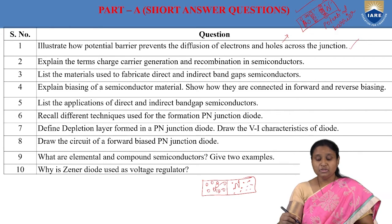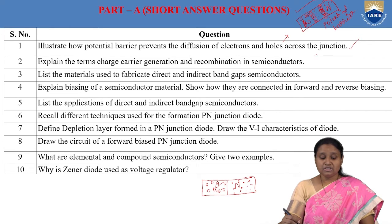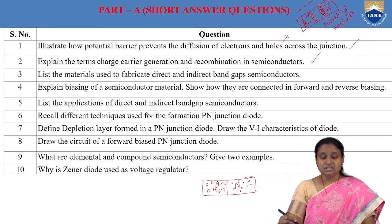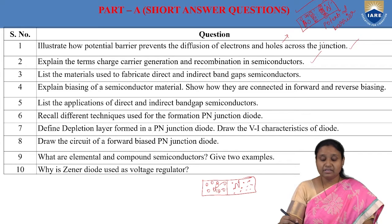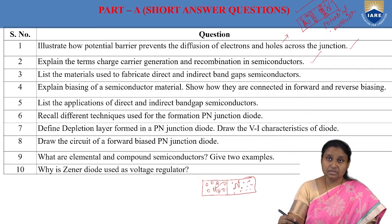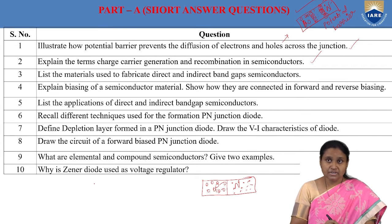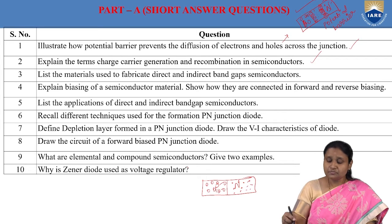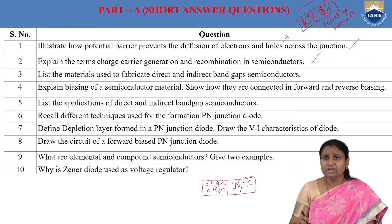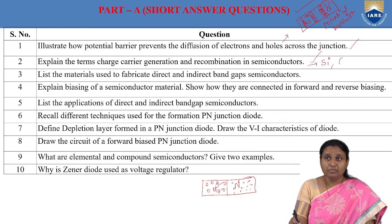Coming to the second question: explain the terms charge carrier generation and recombination in semiconductors. Generally, if we take semiconductors, the best examples are silicon and germanium.